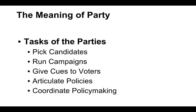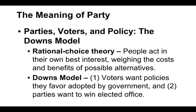Let's talk about Downs and the rational choice theory. People act in their own best interest, weighing the costs and benefits of possible alternatives. Downs loved parties. Voters want policies they favor adopted by government, and they want parties to win elected office. Downs felt that voting for parties or being part of a party was the best way to get your vote to be counted and for it to mean something. Unless you could make sure that your vote was meaningful, parties are the best way to get your vote to be meaningful.